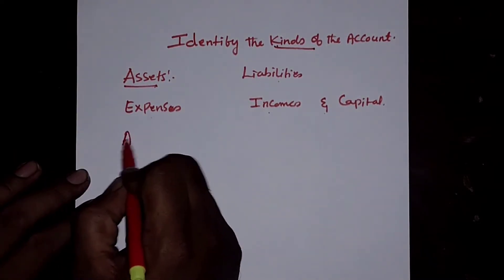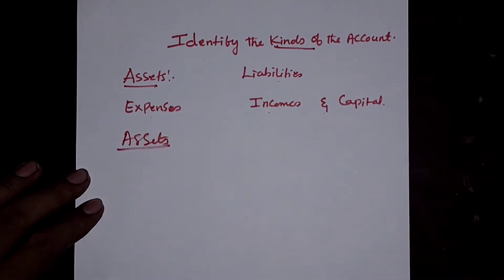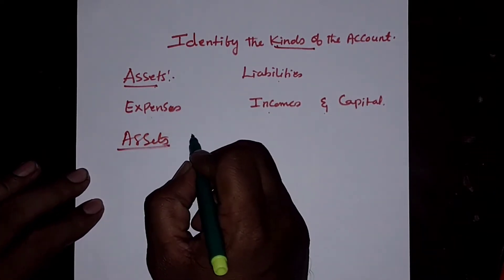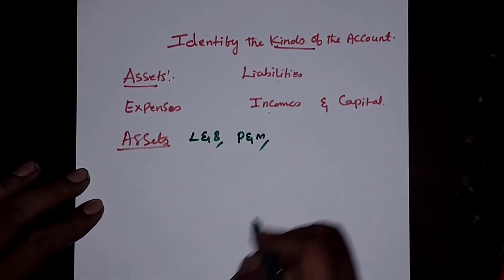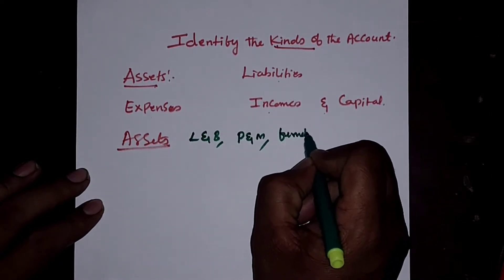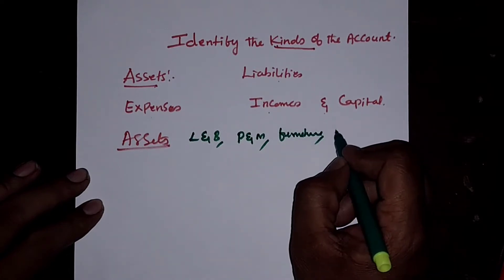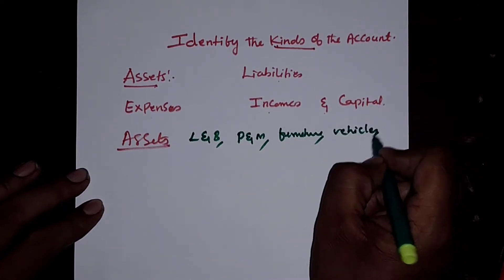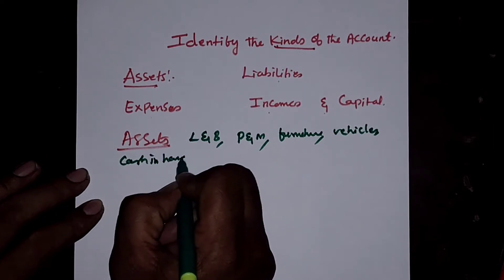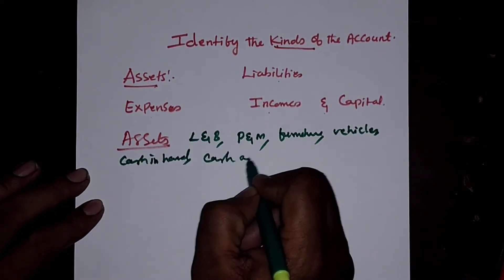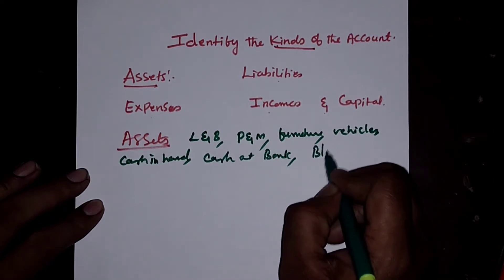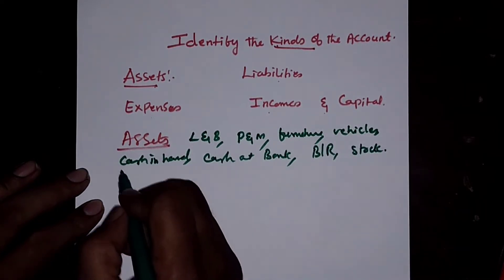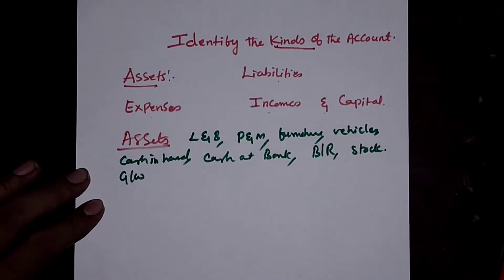First, Assets. Assets include Land and Building, Plant and Machinery, Furniture, Vehicles, Cash in Hand, Cash at Bank, Bills Receivable, Stock, and Goodwill. All these are Assets.